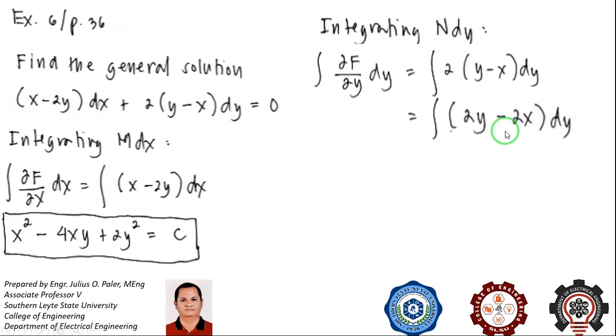Integrating N dy, our X variable is a constant, and integrating quantity (2Y minus 2X) dy will give us Y squared, because this is Y squared over 2, cancel 2, and this is 2X constant, so you have 2XY plus B of X.